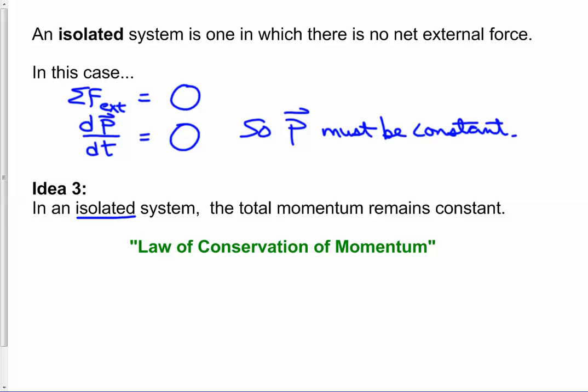In this video we're going to do a few more examples of problems involving the conservation of momentum. Just as a recap, conservation of momentum applies to the following situation: we have a system of one or two or more objects, and the system is isolated — there's no net external force. Nothing from the outside is pushing or pulling on anything in our system. In such a case, the momentum of the system has to remain constant. That's the law of conservation of momentum.